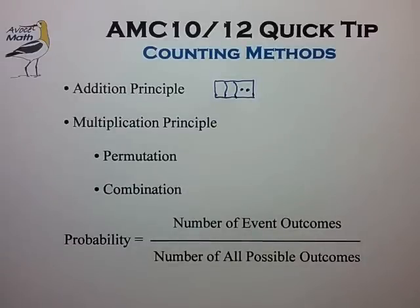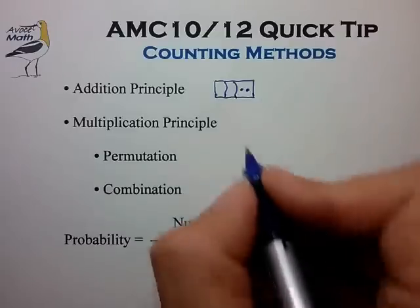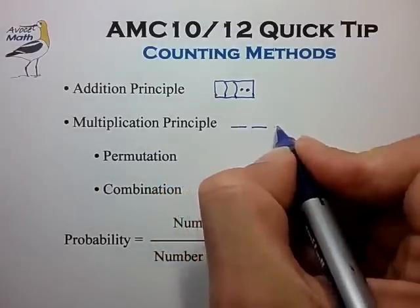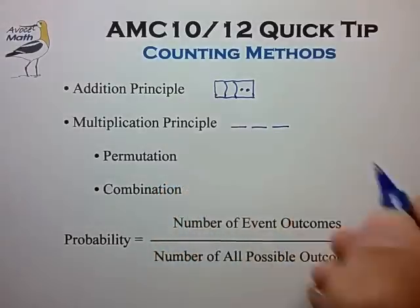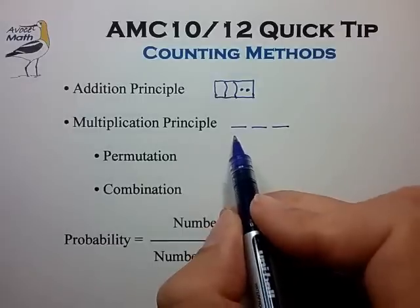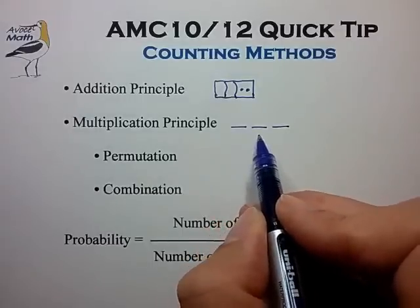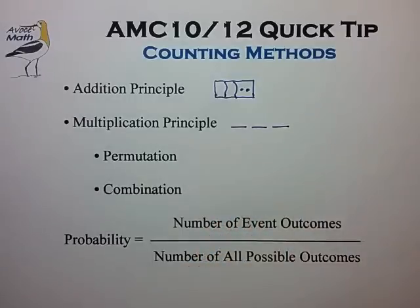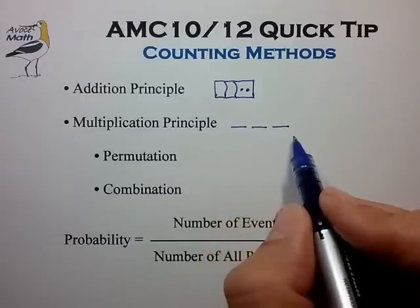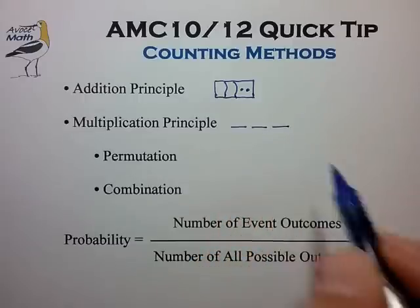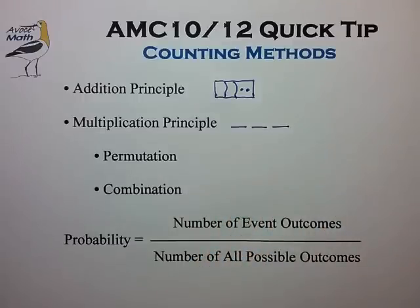The second concept is the multiplication principle, which comes in handy for any multi-step counting process. If we can identify the number of choices available at each step in the process, we can often multiply the numbers together to compute the total number of ways that all the choices can be made in combination.